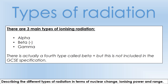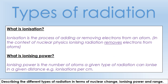Ionization is the process of adding or removing electrons from an atom, but in the context of nuclear physics ionizing radiation just removes electrons. This goes into the definition section of your booklets - whenever you see anything in purple it'll go in the definition section or the equation section.